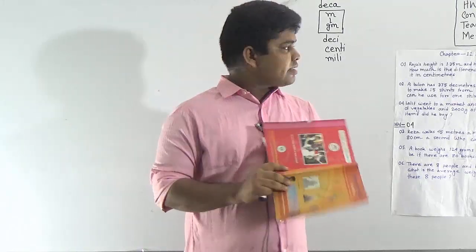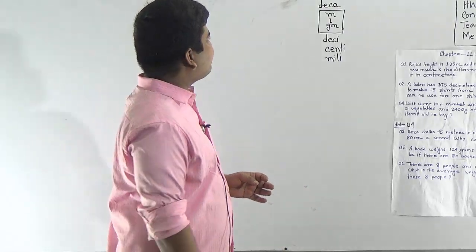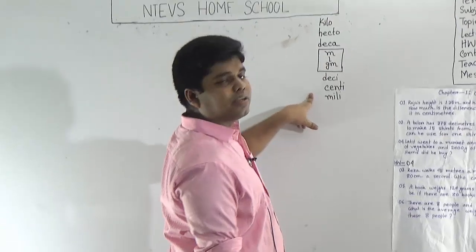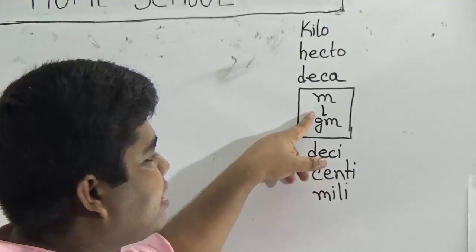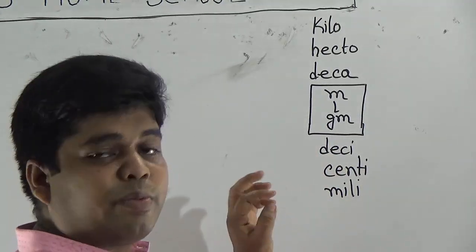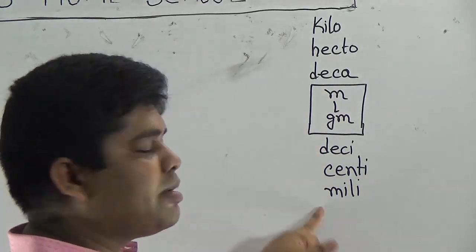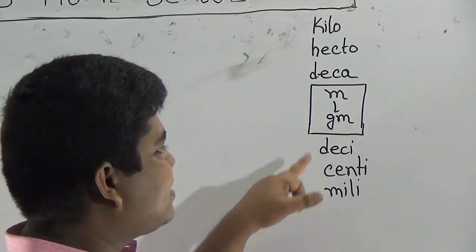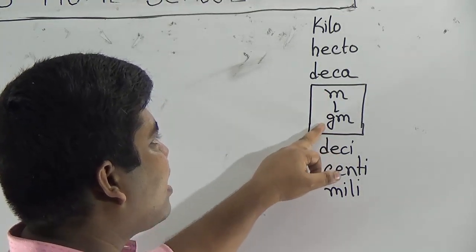Let us start our class. My dear students, before starting our class, please first know this chart. Here: kilo, hecto, deca — meter, liter, gram — deci, centimeter. Please memorize this: kilo, hecto, deca, deci, centimeter, and in the middle, meter, liter, gram.